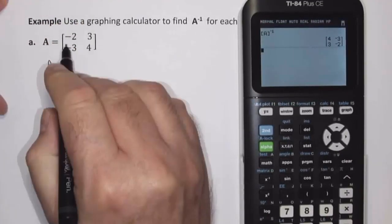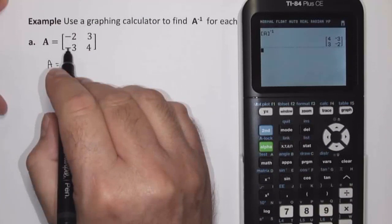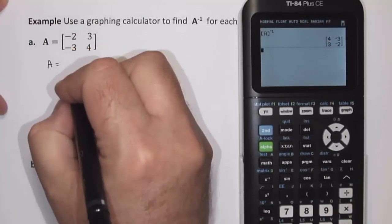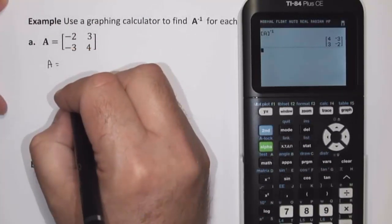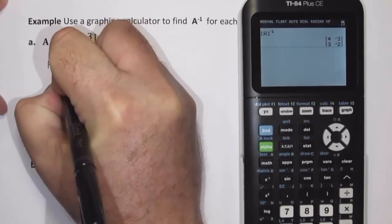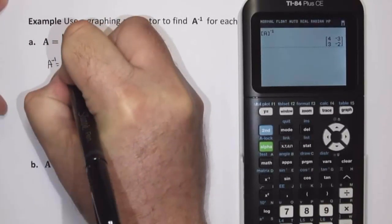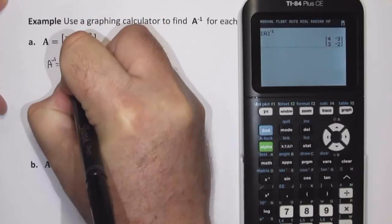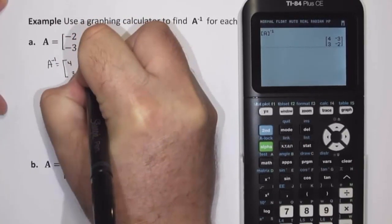which is also a 2x2 matrix: 4, negative 3, 3, negative 2. So if Matrix A is this matrix, then A inverse is the 2x2 matrix 4, negative 3, 3, negative 2.